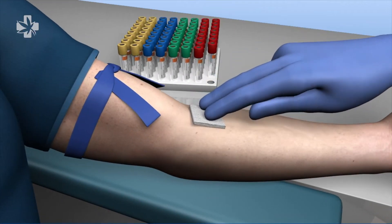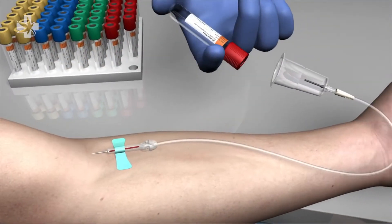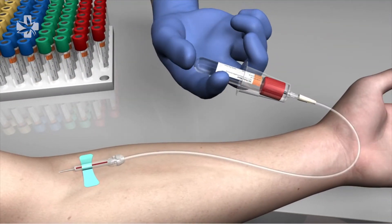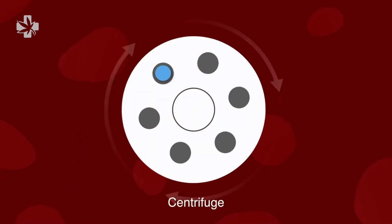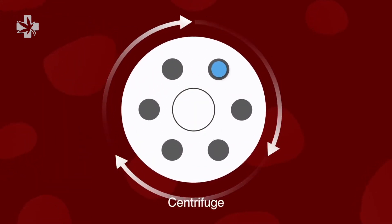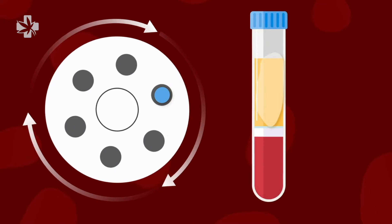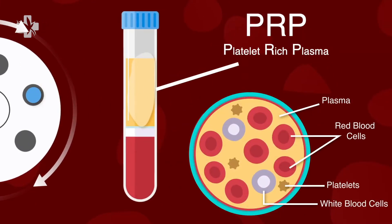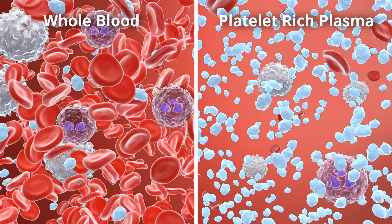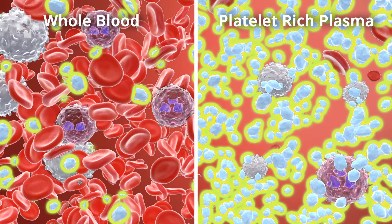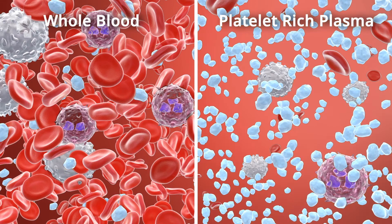PRP is obtained by collecting a sample of blood from the patient. The blood is then processed through centrifugation utilizing a specialized processing system. After processing, a PRP sample should provide a therapeutic dose of platelets between a three to seven fold concentration compared to circulating blood.